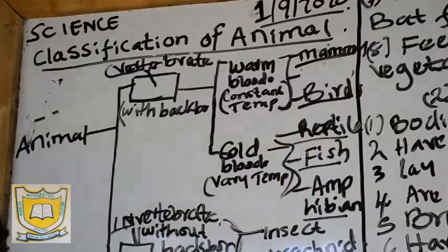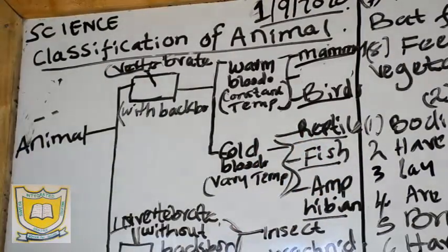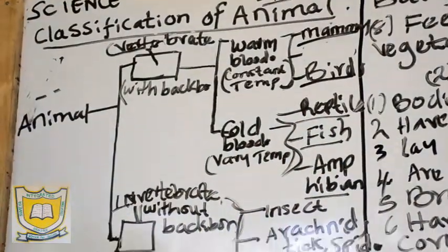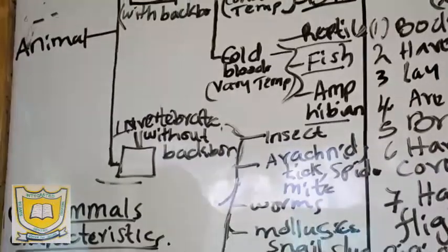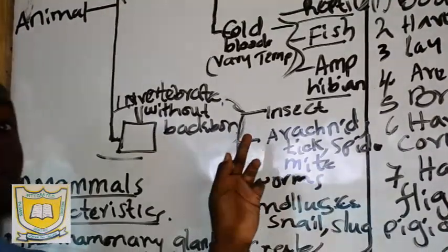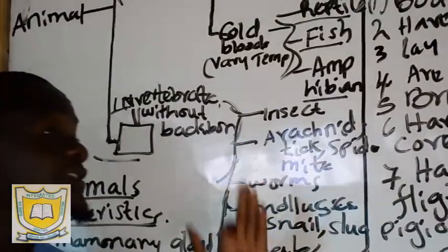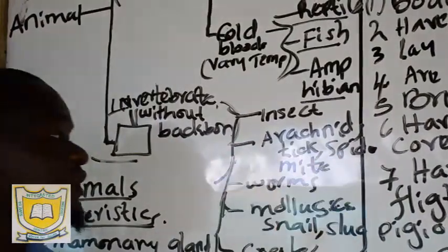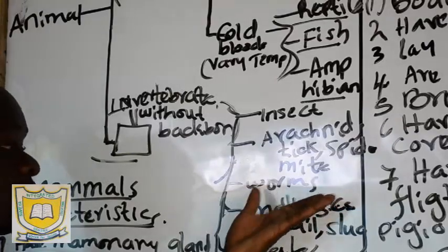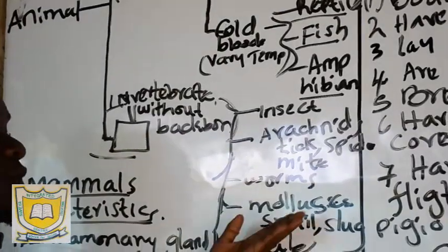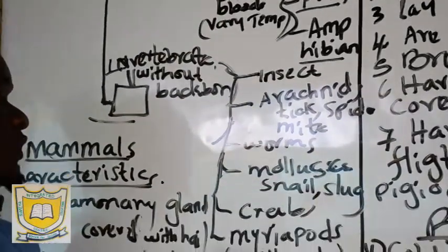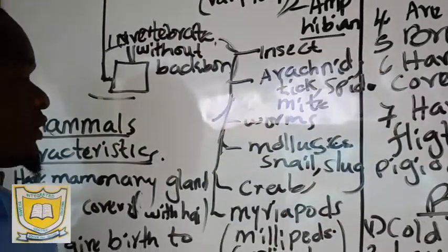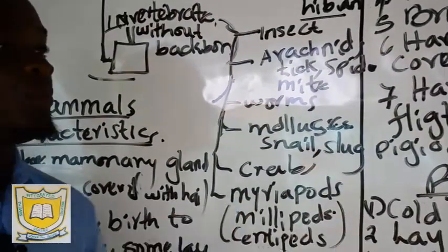When we come to invertebrates, we group them as either insects, arachnids, worms, mollusks, or grubs and myriapods.